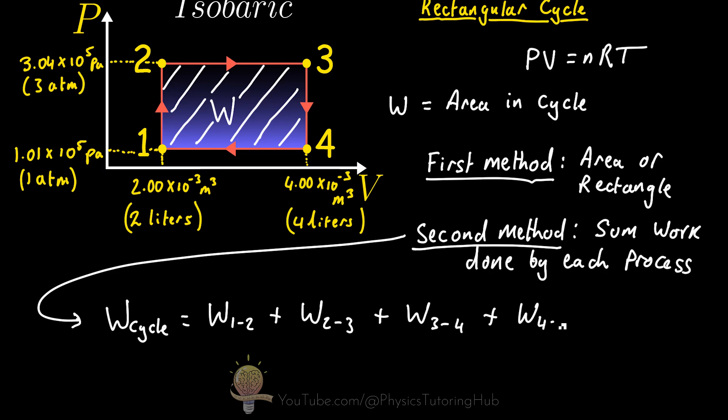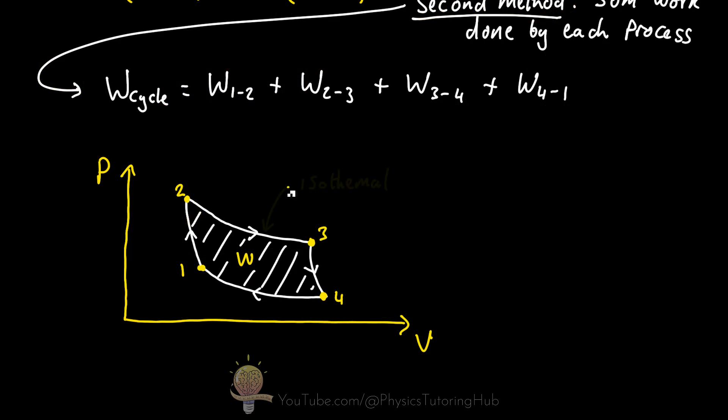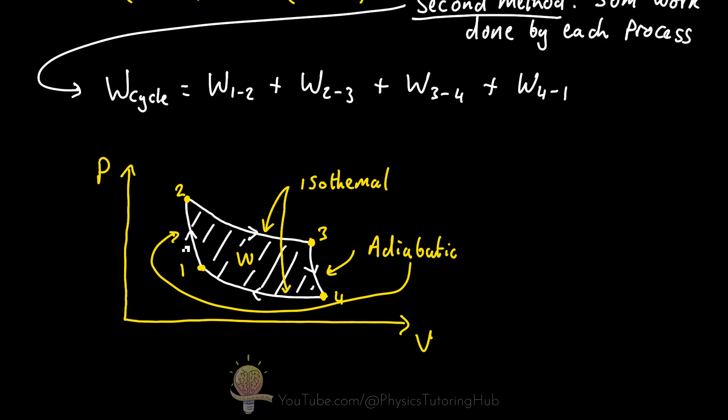I've covered how to calculate work done for various thermodynamic processes in previous lessons. So why would we want to sum individual processes when it seems more complicated? Not all cycles are going to be as simple as this. Some cycles will have odd shapes where there's no straightforward formula to calculate the area. For example, in the case of the Carnot cycle, we'd have to sum up the work done for each process individually — two adiabatic processes and two isothermal processes.